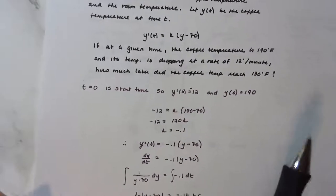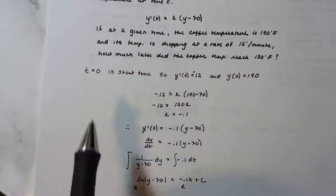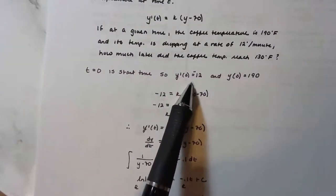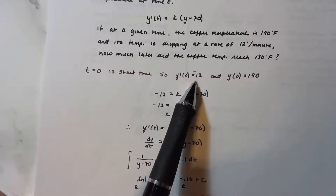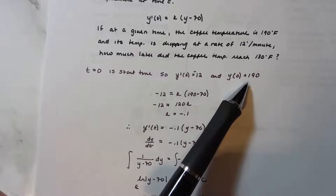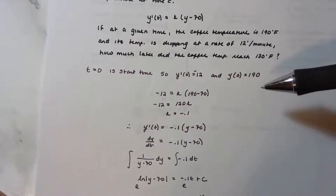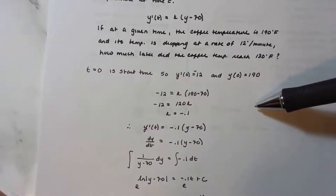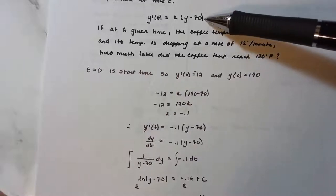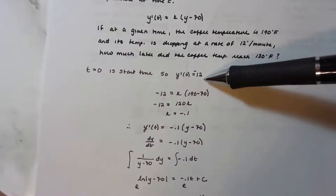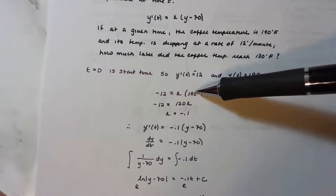We use separation of variables. At time t = 0, the rate of cooling is −12 degrees per minute, so dy/dt = −12. The coffee was 190 degrees when poured. We have two initial conditions — one involving the derivative and one not. Using the differential equation with the rate condition: −12 = k(190 − 70).